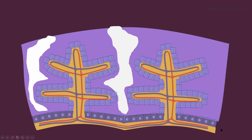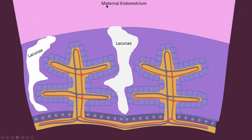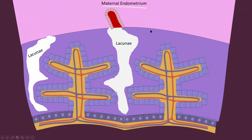Below this is the chorionic plate, which consists of chorionic blood vessels that go into these tertiary villi. This structure is embedded into the maternal endometrium — specifically into the decidua basalis. As this placenta invaded the decidua of maternal endometrium, it also invaded some of the maternal blood vessels; specifically, the spiral artery is shown here. As the spiral artery is invaded by this invasive syncytiotrophoblast, the blood from this spiral artery starts to pour into the lacunae.